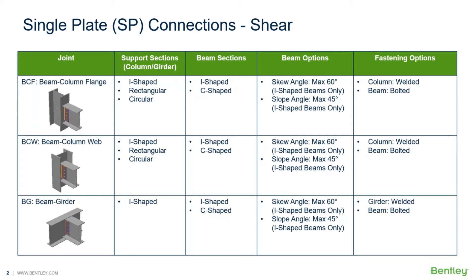In this series of videos, we will be focusing our attention on the steel connection design workflow for designing shear connections for a variety of different beam-to-column and beam-to-girder joints. In Ram Connection Standalone, different joints and different connection templates are compatible with certain types of member properties and framing options. All of these options are considered when we set up the joints. For this video, we will be focusing our attention on single-plate shear connections for both beam-to-column and beam-to-girder joints.